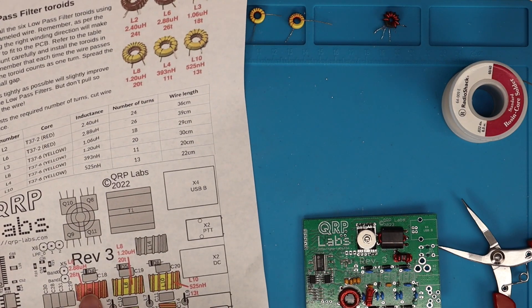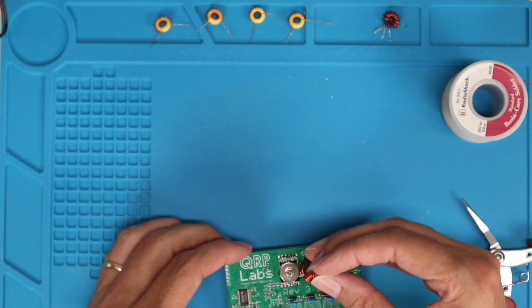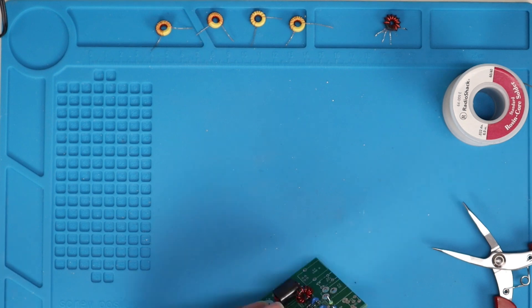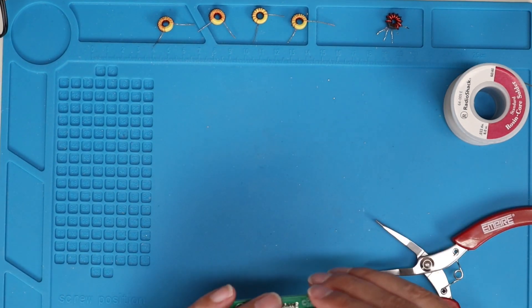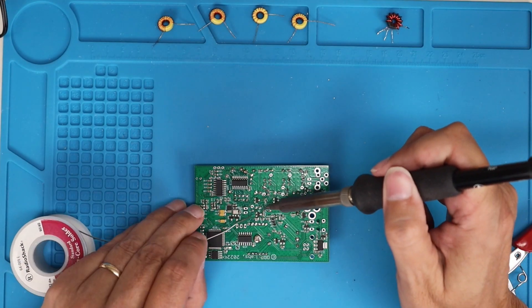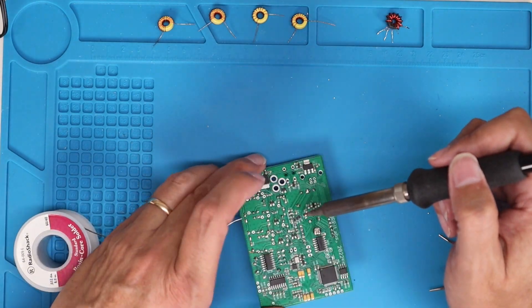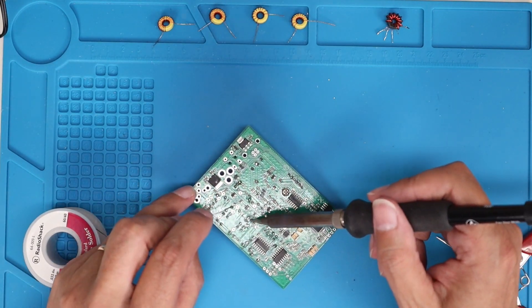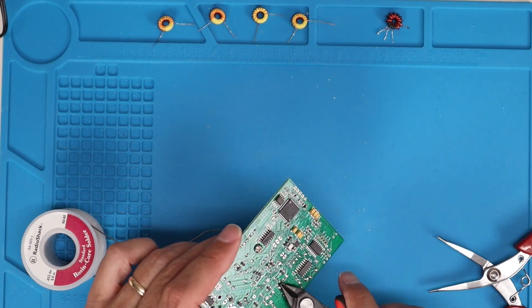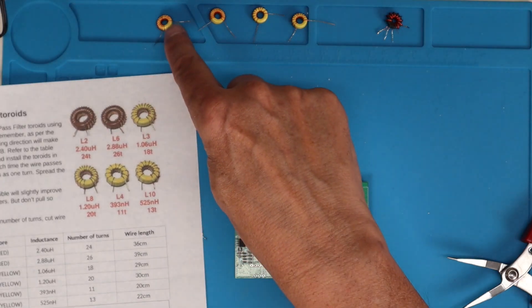So the next one is going to be L6. And L6 is the 2.88 microhenry inductor, and that's also for 80 meters. And both of these are on the T37-2 red cores. And what that is, is the makeup of the actual ferrite itself, the core. So those numbers at the end, the 2, and then the yellows are the dash 6, have to do with the actual mix of the inductor itself, or the core itself.